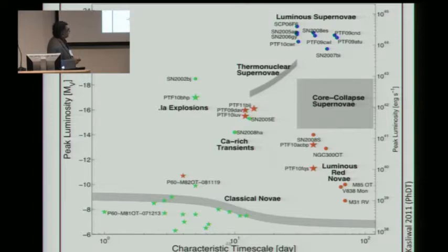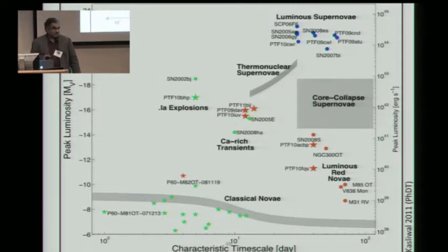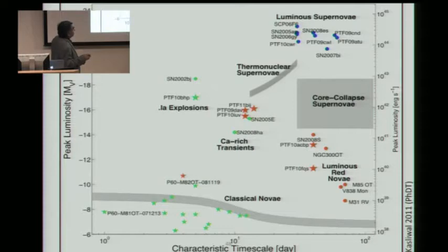Let's go back to the Zwicky diagram. Peak luminosity versus time scale. I have classical novae, the type 1A thermonuclear supernovae, core collapse. You can see we are slowly filling up. This is the usual test I do to figure out if someone is a physicist or astronomer. The physicist is trying to figure out what is the one parameter which explains this family. The astronomer looks and says, what can I do to discover the white space?